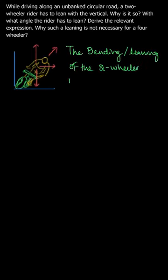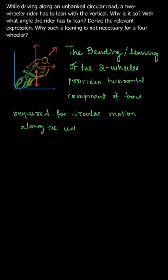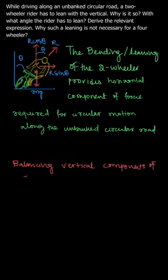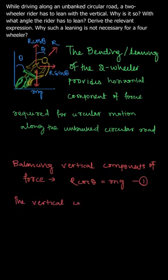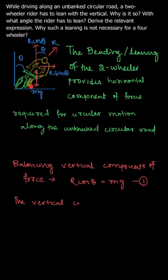Let us first look at the diagram. Here we can see that the two-wheeler is leaning with a certain angle from the vertical. This leaning provides the horizontal component of force required for circular motion — specifically, the centripetal acceleration needed. Due to leaning, the two-wheeler experiences a reaction force that is a combination of the normal force and sideways friction. A bicycle moving straight has friction along the tires but not sideways; leaning introduces this sideways friction component.